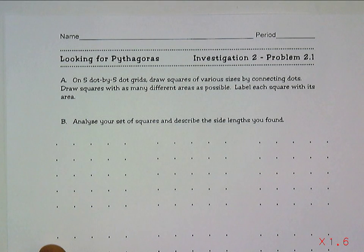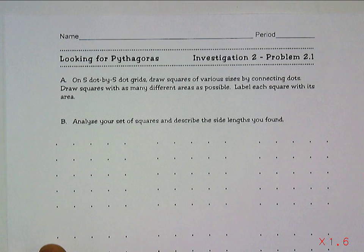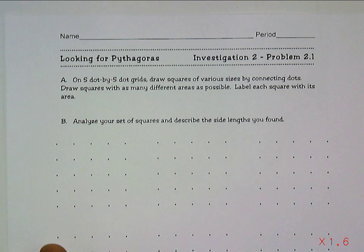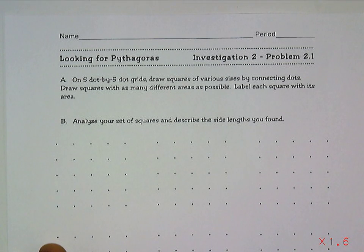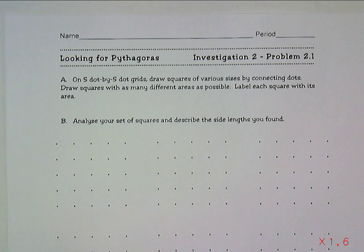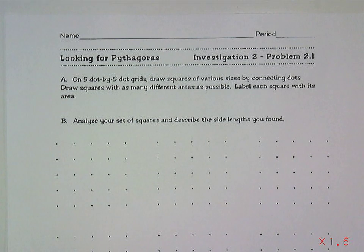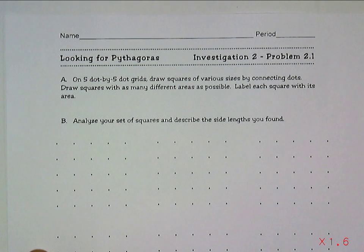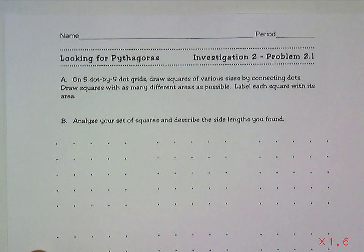This is Lesson 2.1 from Investigation 2 of the book Looking for Pythagoras. In this investigation, we're going to focus on drawing squares of various sizes and trying to determine the area of those squares.